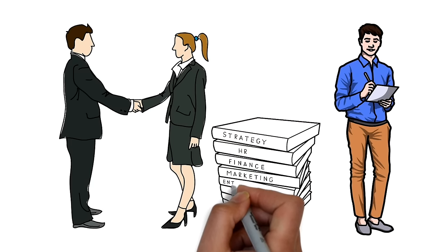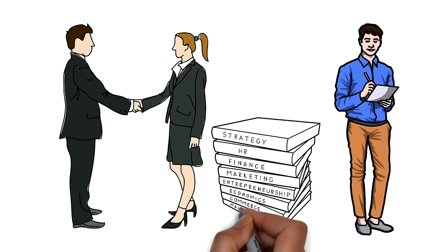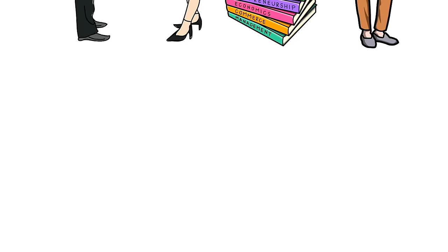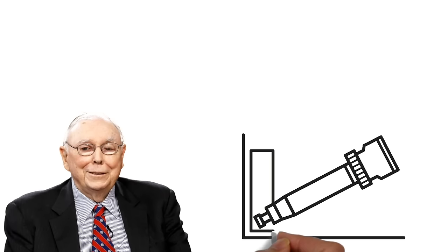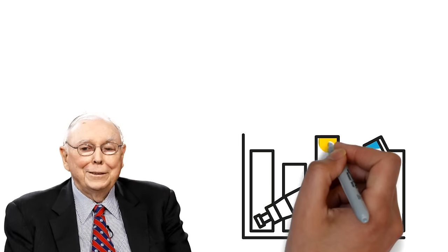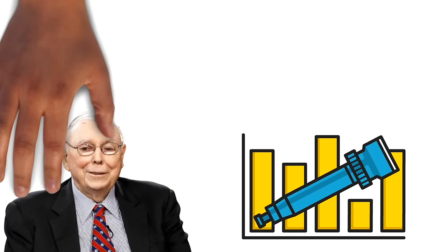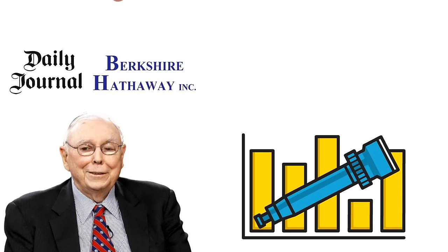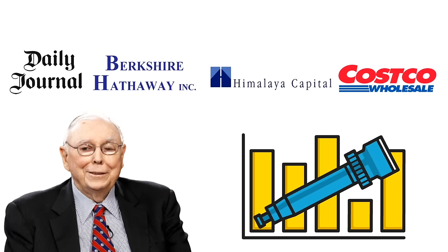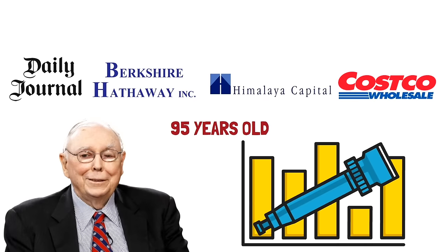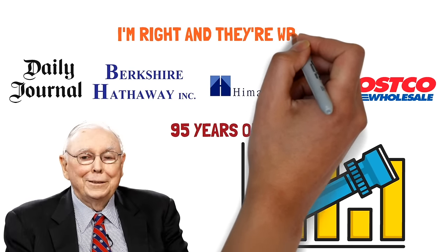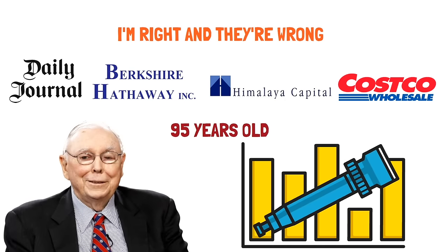This is not the attitude they have at a big investment counseling thing. They think if they study a million things, they can know a million things. And of course, the result is almost nobody can outperform an index. Whereas I sit here with my Daily Journal stock, my Berkshire Hathaway stock, my holdings in Leeloo's Asian fund, my Costco stock. And of course, I'm outperforming everybody. I'm 95 years old. And I probably never have a transaction. And the answer is I'm right and they're wrong. And that's why it's worked for me and not for them.